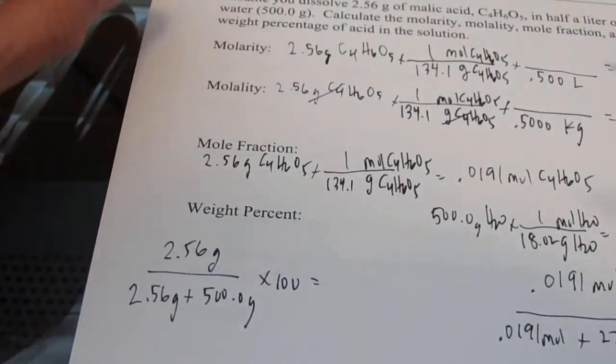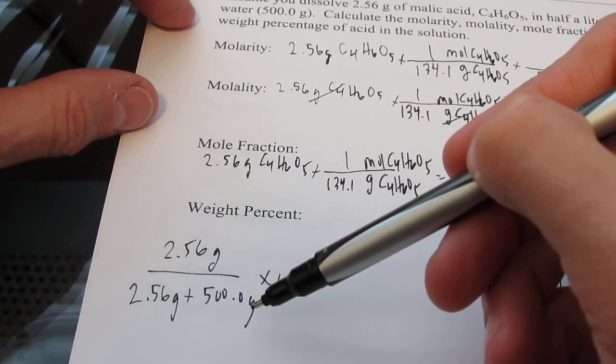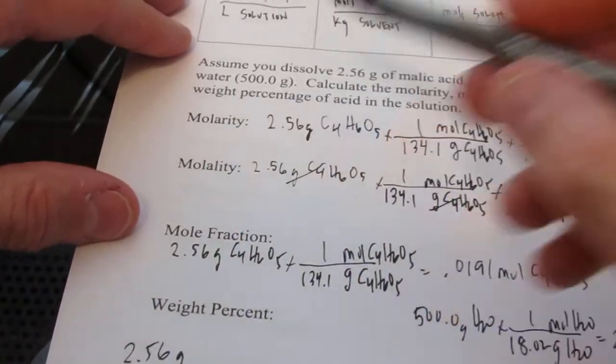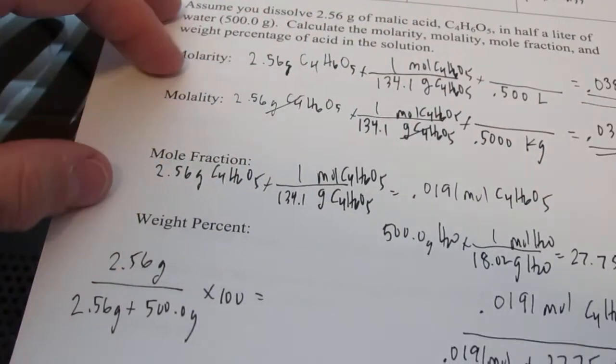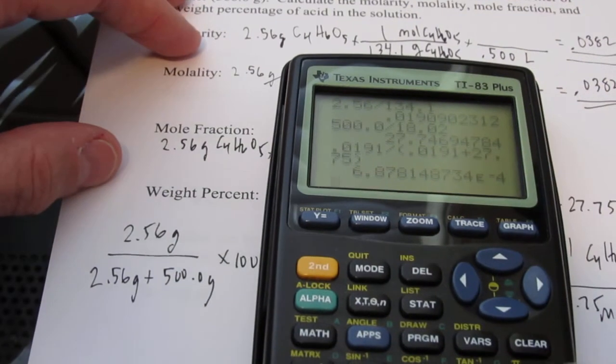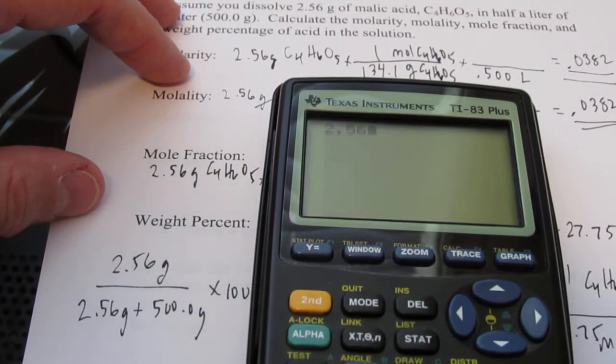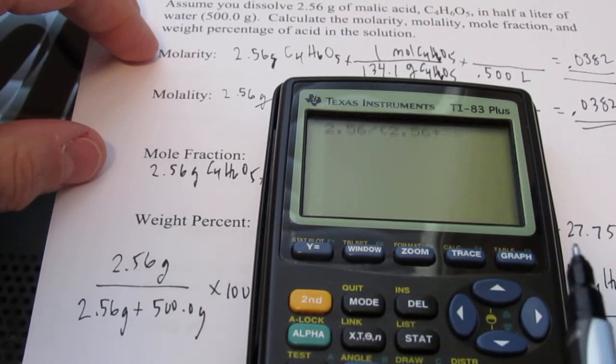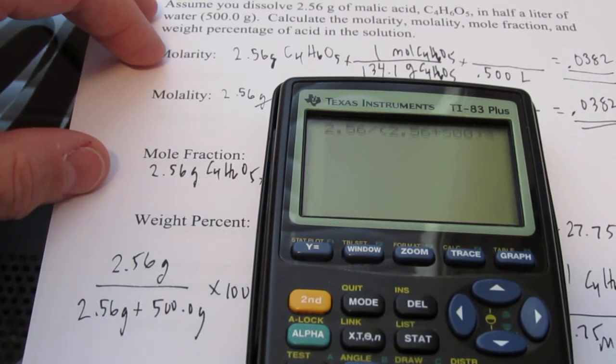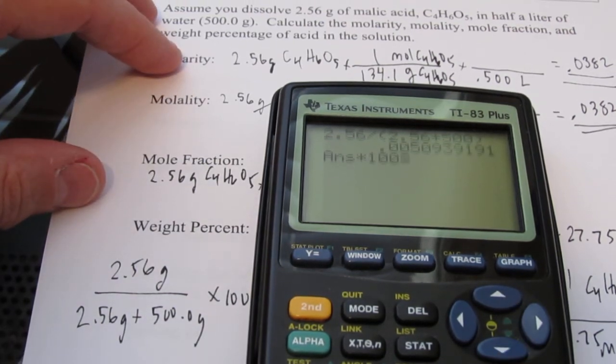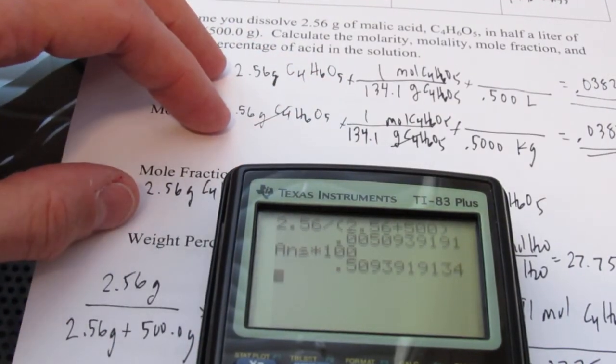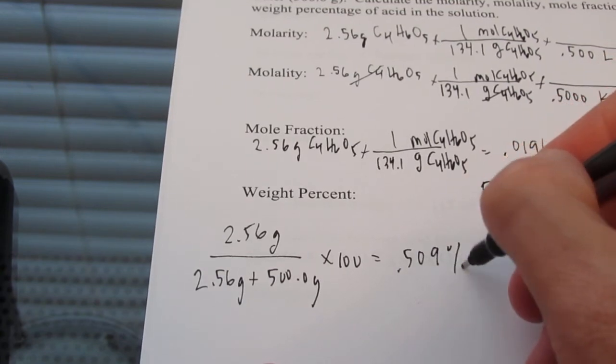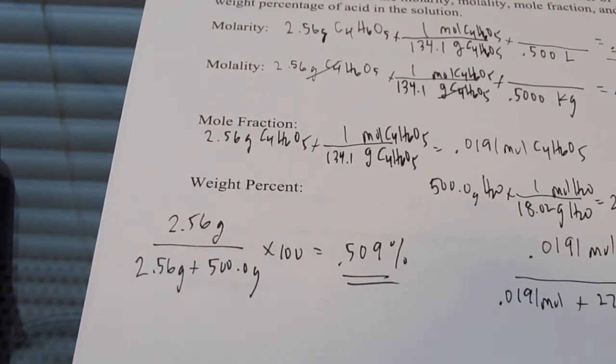Now I notice that some of you kiddos in class were just dividing by 500.0. Remember, it's divided by the total mass. Those that were dividing it by 500 were just dividing it by the mass of water. So be careful on that one. So let's see what we get here. Let's clear this out. 2.56 divided by, let's use my parentheses keys again, 2.56 plus 500.0. And we'll get an answer that will then multiply by 100 to change it to a percentage. Looks like I get 0.509 percent. 0.509 percent. So that would be my weight percent.